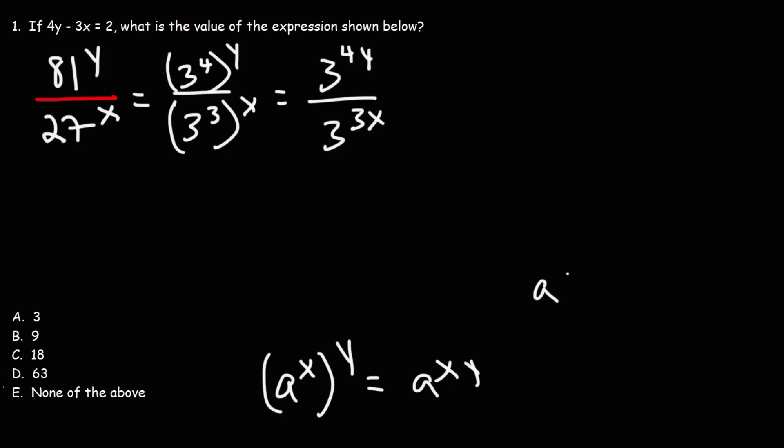Now, another property of exponents is that when you divide two exponents that have a common base, you can subtract the exponents. So it's the top exponent minus the bottom exponent. So a to the y over a to the x is equal to a raised to the y minus x. So this becomes 3 raised to the top exponent 4y minus the bottom exponent 3x. Now notice that we were given the expression of 4y minus 3x. We know the value of it, and it's equal to 2. So we can replace this with 2. This becomes 3 squared, which is 3 times 3, and 3 times 3 is 9.